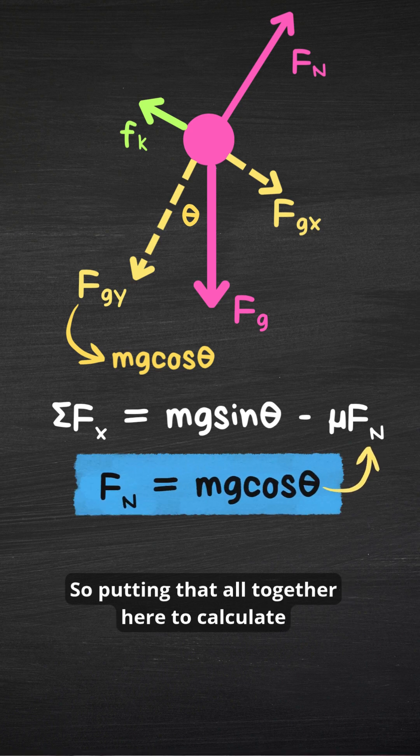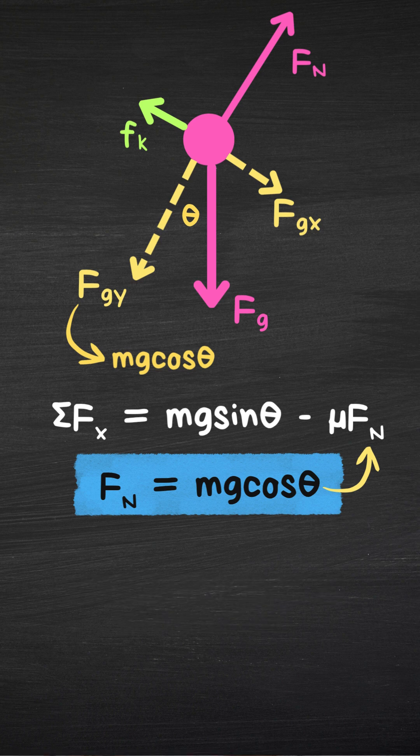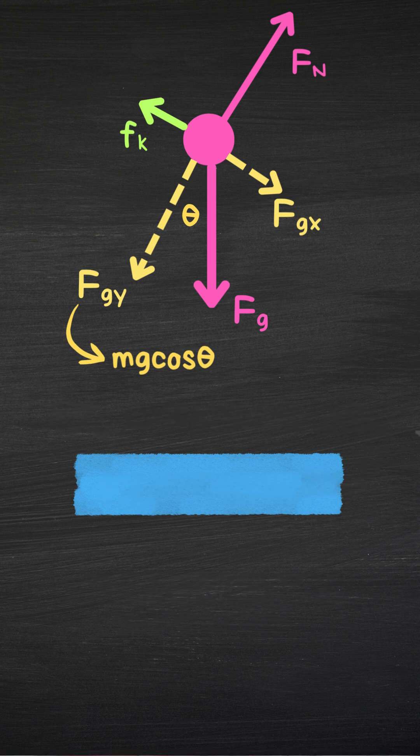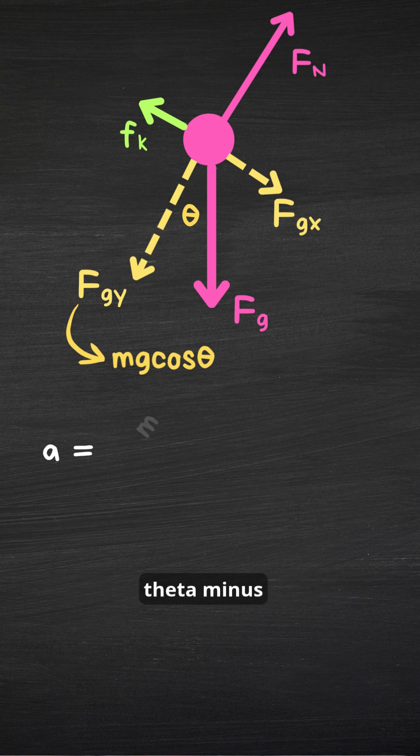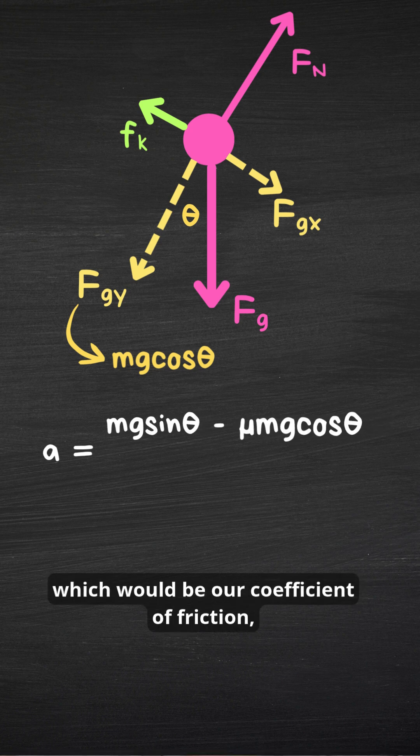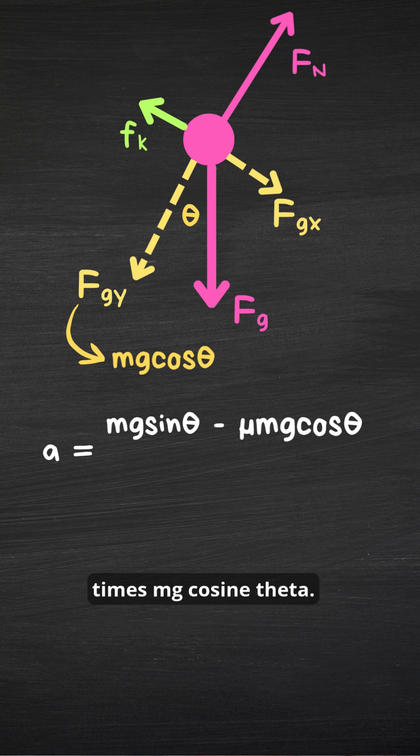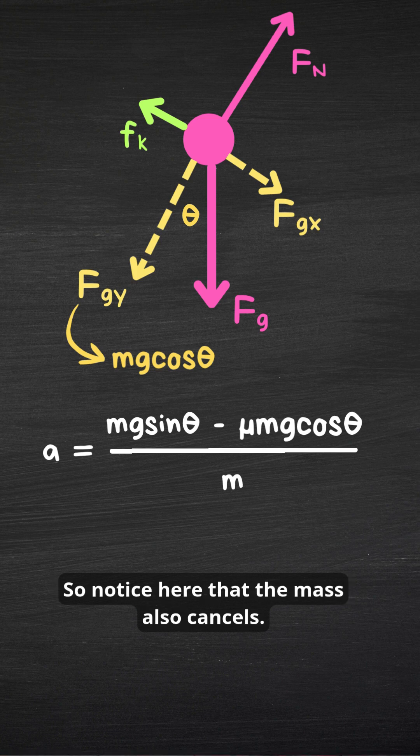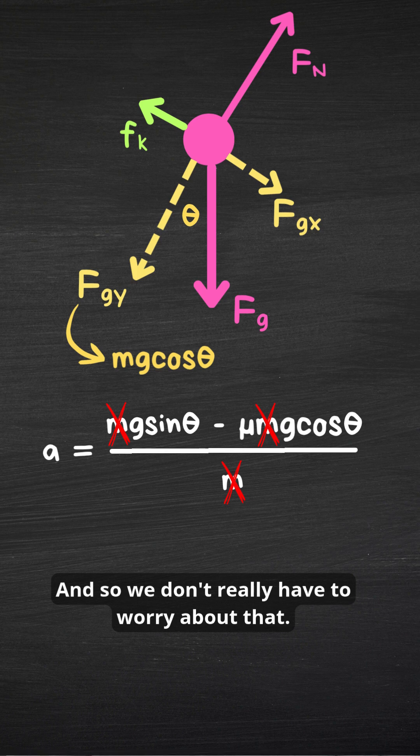So putting that all together here to calculate acceleration for something on an incline where we have friction, we're going to take our mg sine theta minus our expression for friction, which would be our coefficient of friction times mg cosine theta. And we're going to divide that by the mass. So notice here that the mass also cancels.